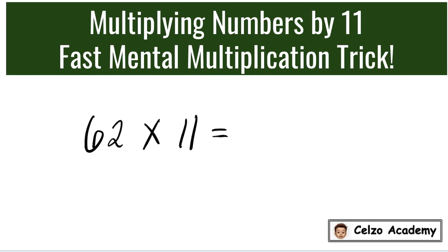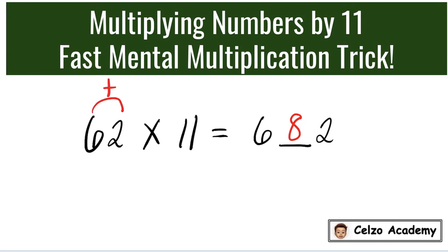Next problem: 62 times 11. Same process — we write the numbers 6 and 2 and leave a space between them. The number between 6 and 2 is 8, that's the sum of the digits 6 and 2. So the answer is 682.